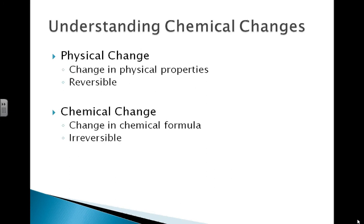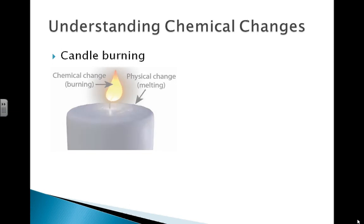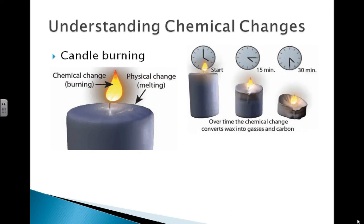Chemical change involves changing the chemical formula. We are now changing one substance into another and that is considered an irreversible change. For example, a candle burning involves chemical change and physical change. Over time, the chemical change will convert the wax in the candle into gases and carbon.